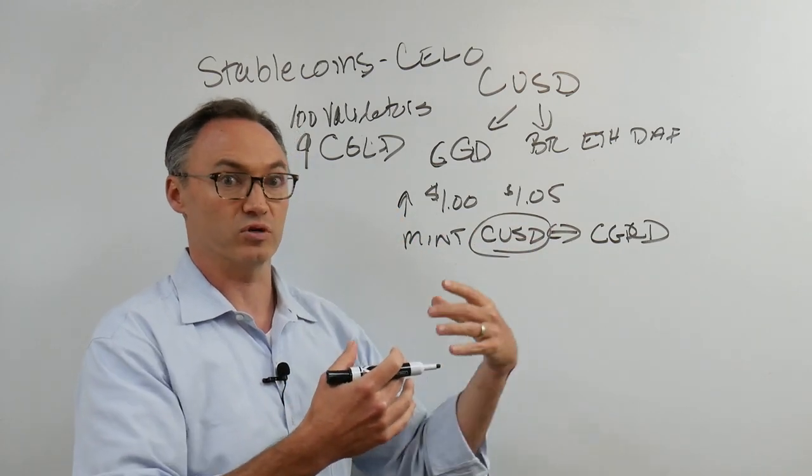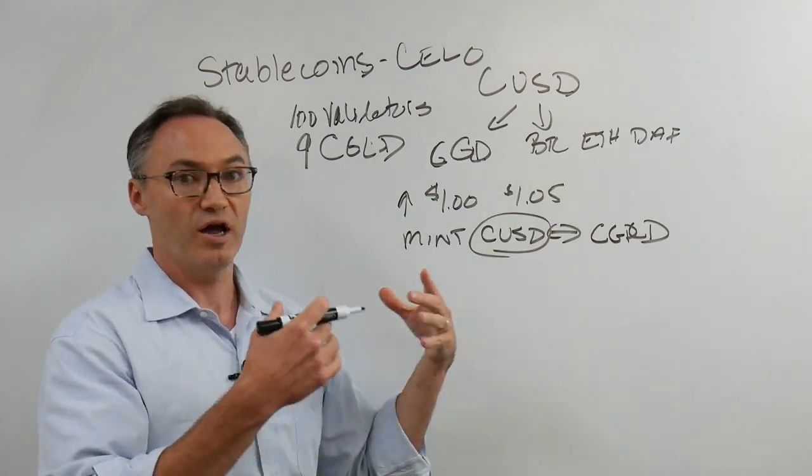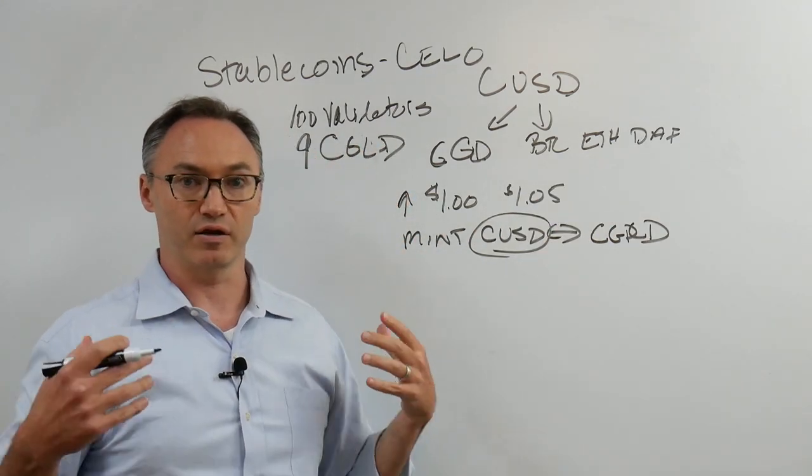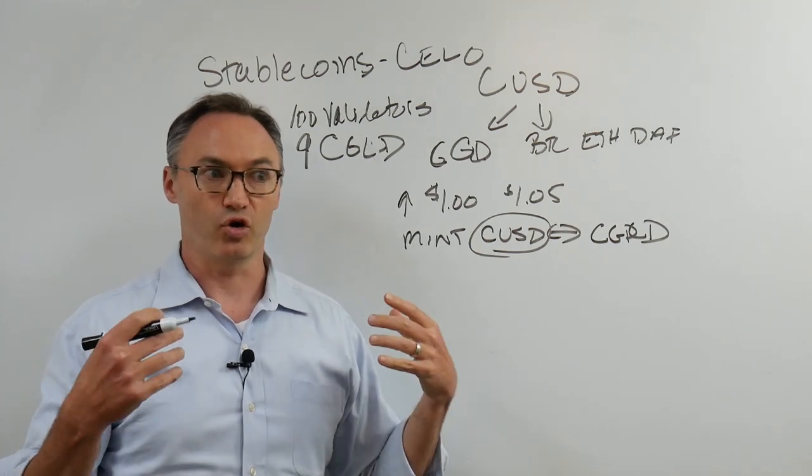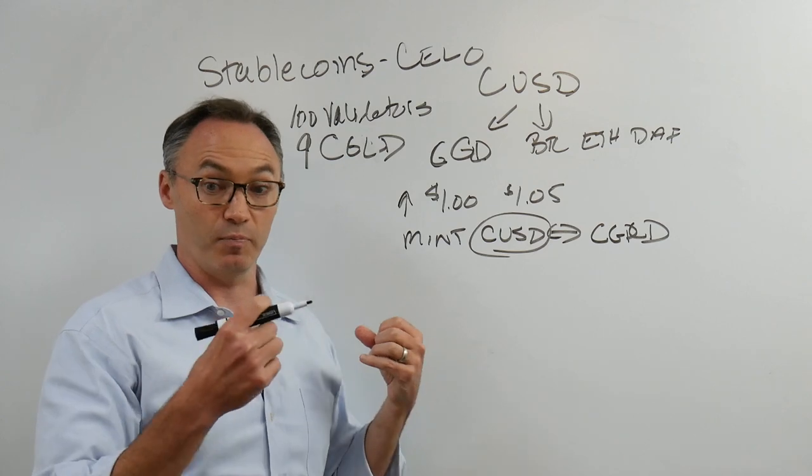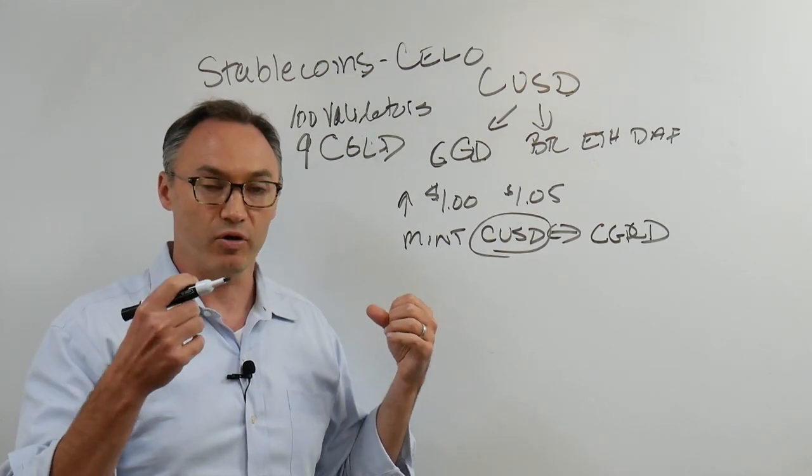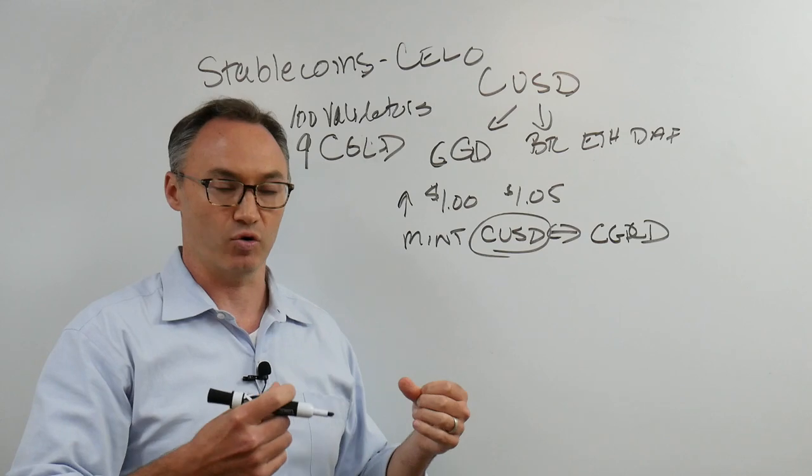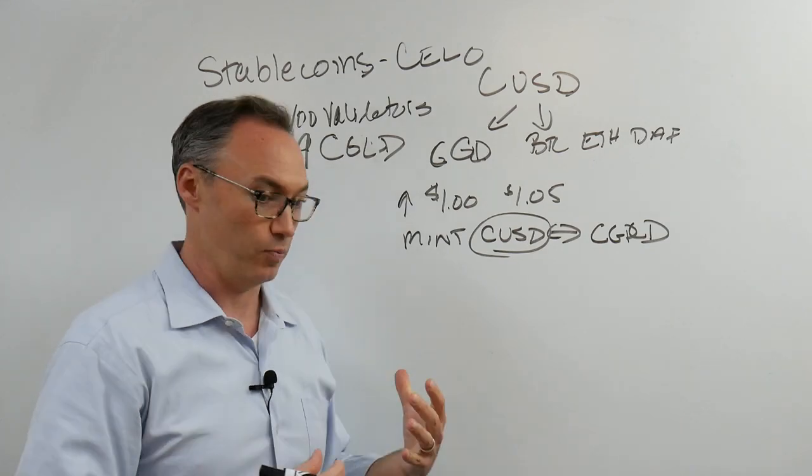The demand for CUSD is up, the demand for the network is up. Therefore, the protocol is going to print more dollars, make more stablecoin, and buy back the Celo gold and put it in the reserve, making the value of Celo gold go up. There's less of it out there in the world. It's good for the validators and the network.